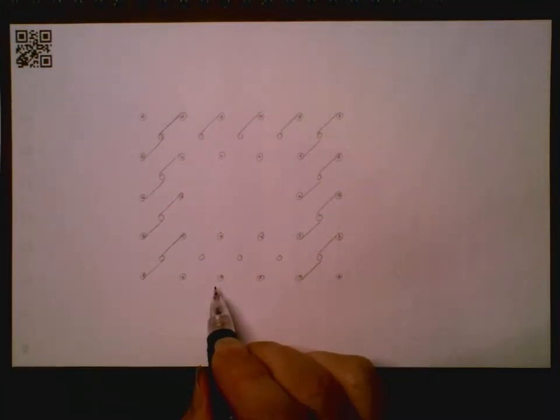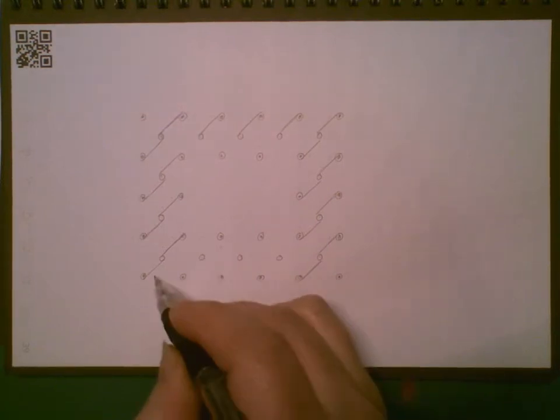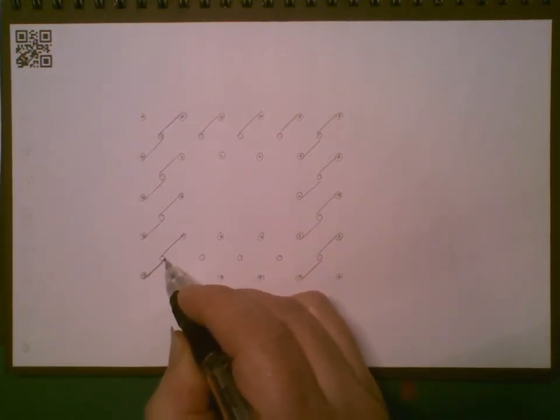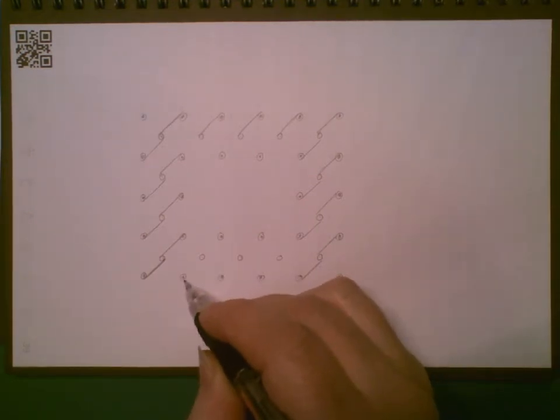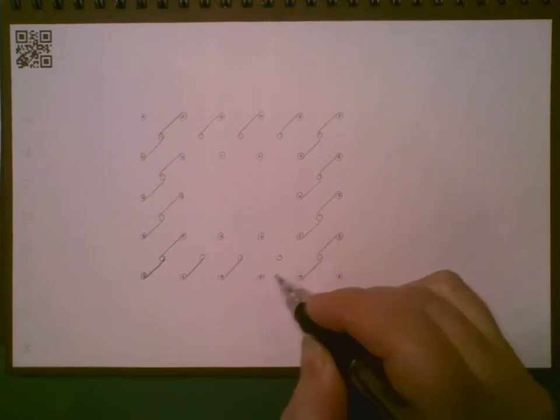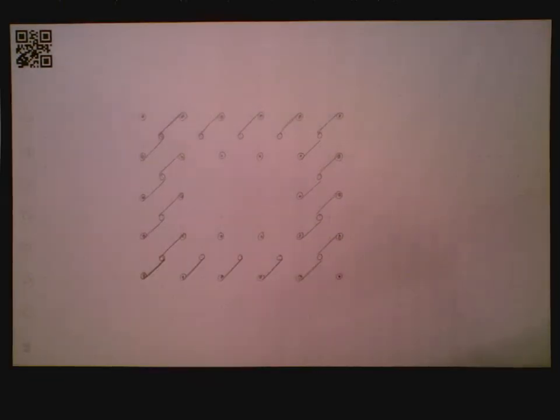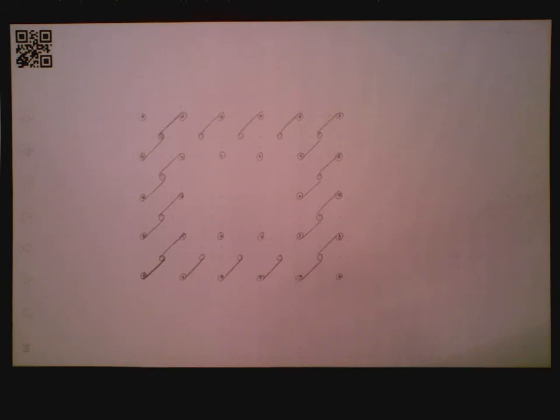And then in the bottom row, you can see this bottom corner here comes from underneath the dot to underneath the next one, just to the right. Do the same thing. So below and below.